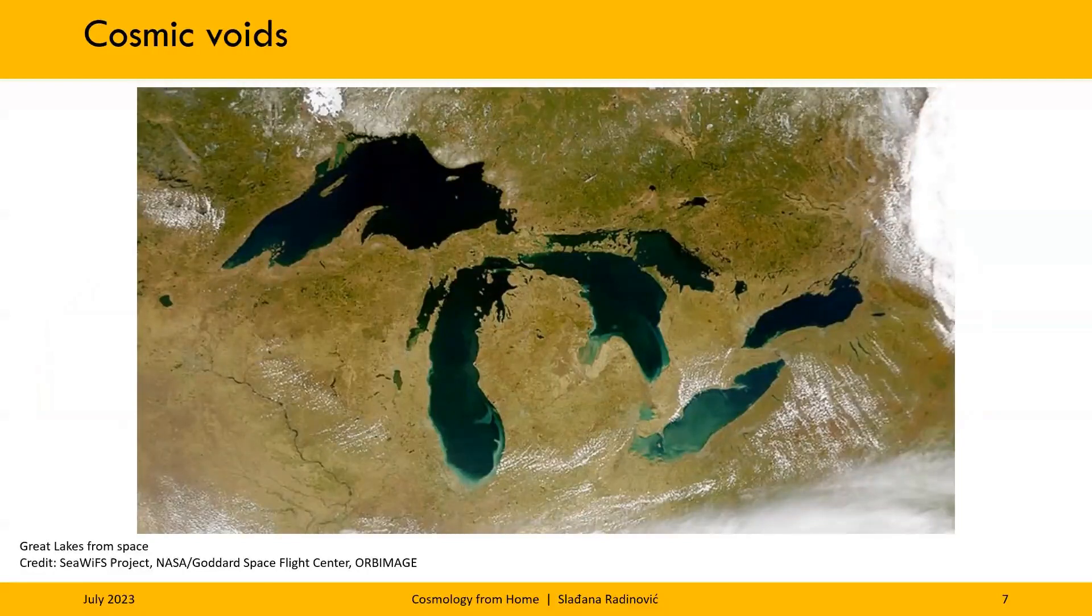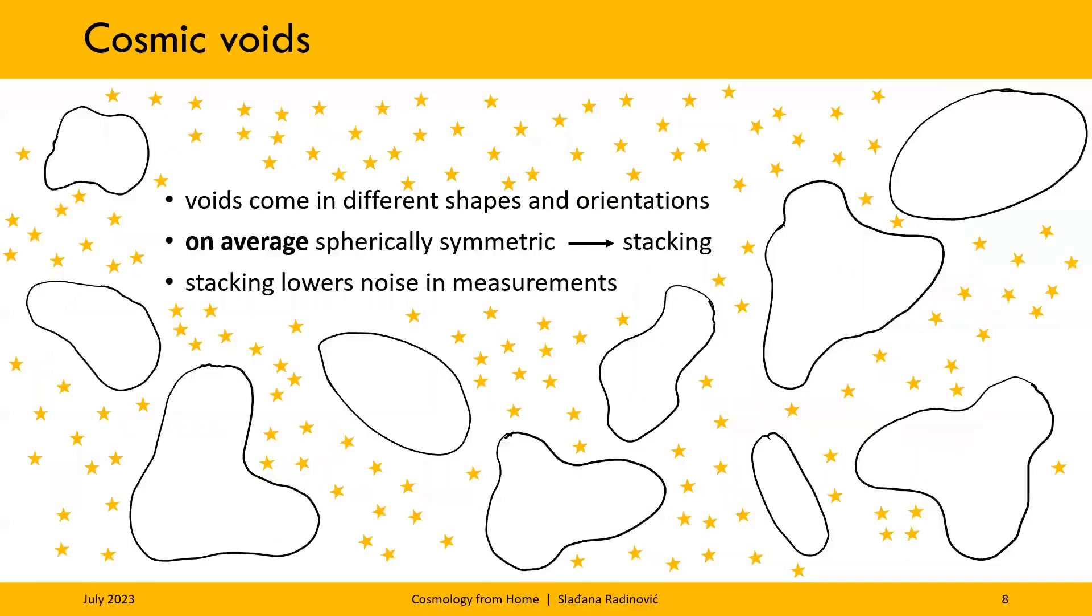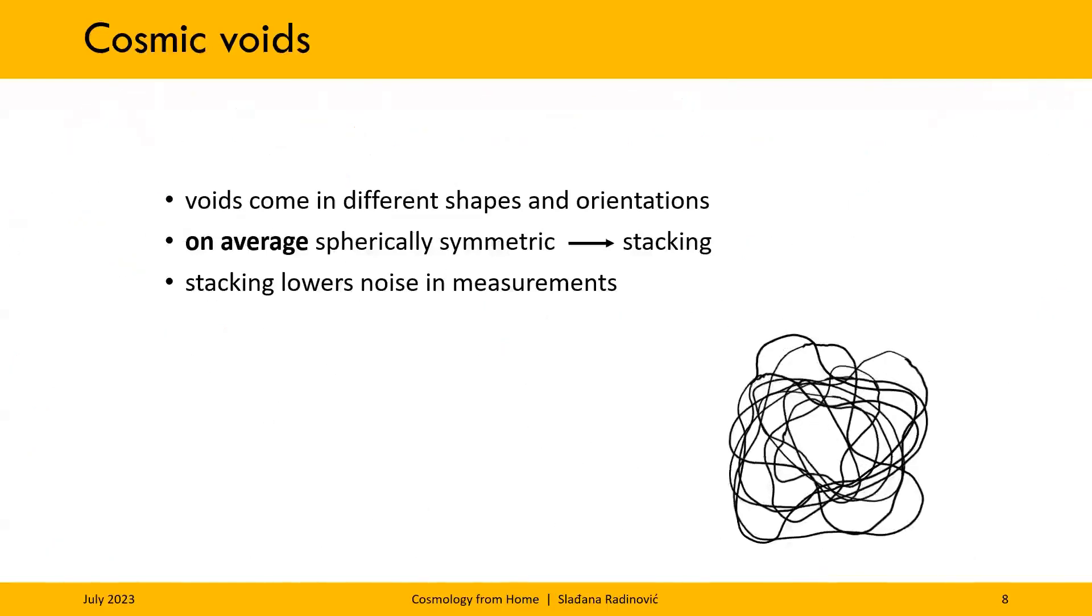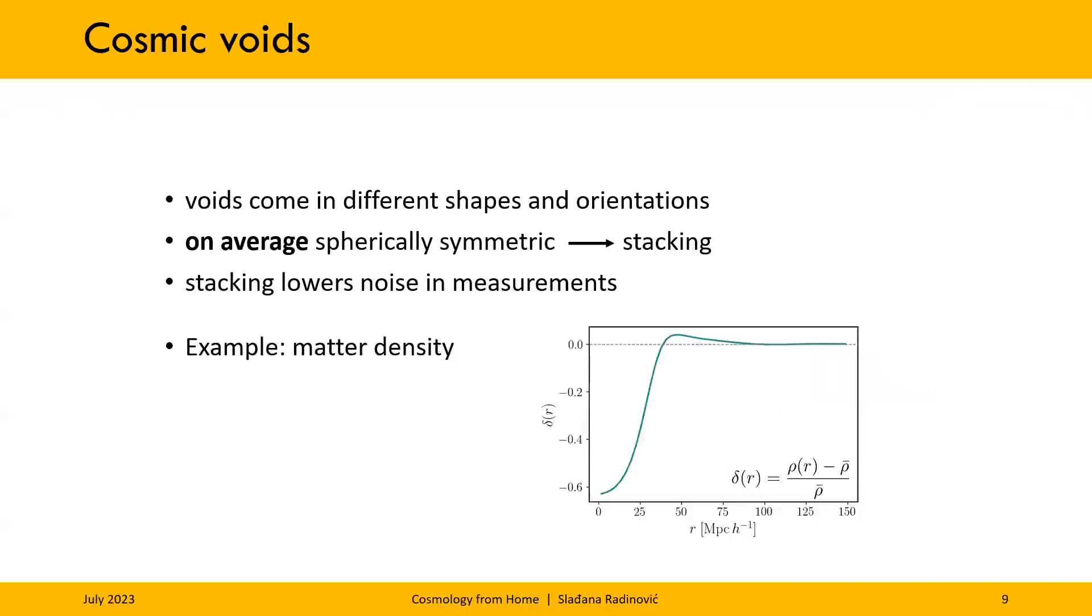But just with lakes, voids come in many different shapes, sizes, they're differently oriented in the sky. And not only that, since they are underdense regions, they have very few galaxies in and around them, which makes it very difficult to actually measure any sort of property. What we can do instead is stack the voids on top of each other. And if we stack enough voids together, we will get something that has a lot more galaxies so that we can actually measure some properties like the density profile of a void, which is shown in the plot here.